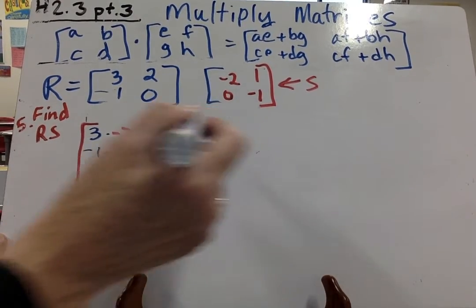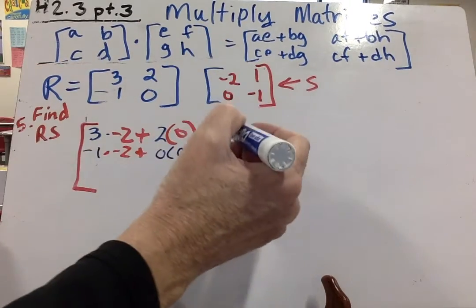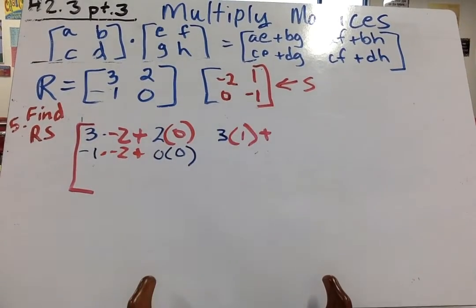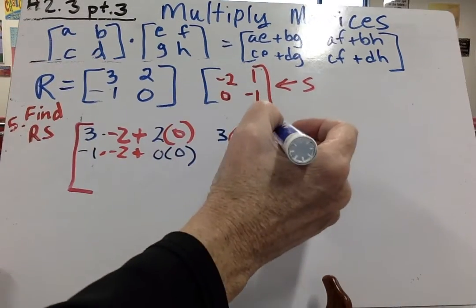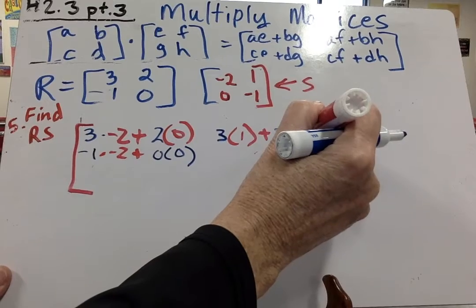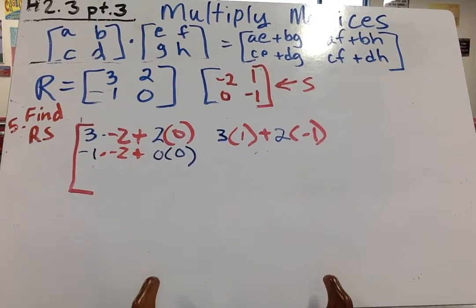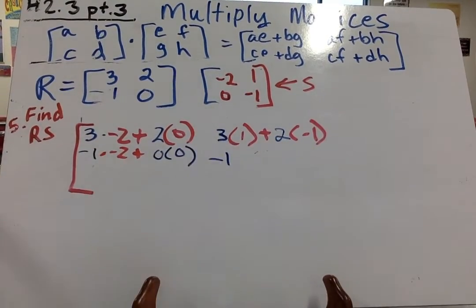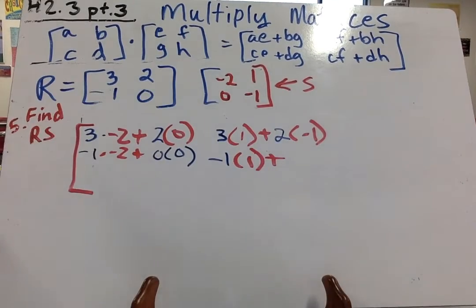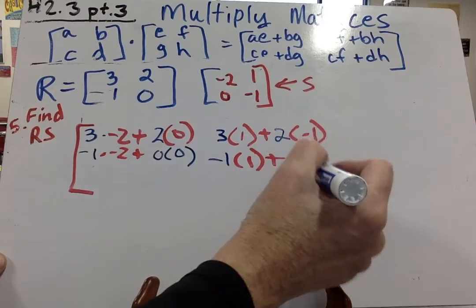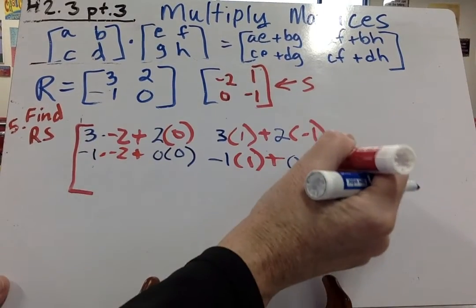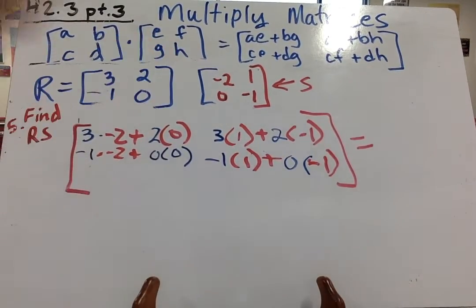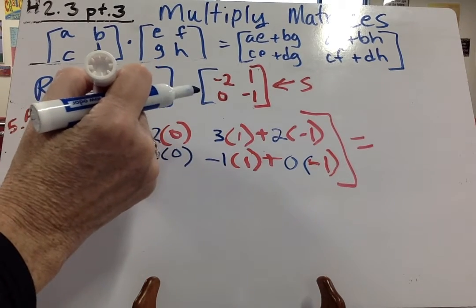And that's our bottom one. Now the next one to the upper right is going to be 3 times 1 plus 2 times negative 1. Then we say our last one, negative 1 times 1 plus 0 times negative 1. So this is a 2 by 2 multiplied with a 2 by 2.